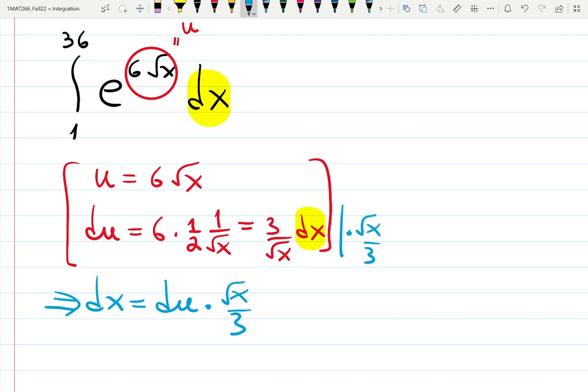I multiplied by square root of x over 3 to isolate dx, but you're not supposed to have an integral in terms of u and x at the same time. So we need to do something with square root of x. Well, from the first line you can find that square root of x is u over 6.